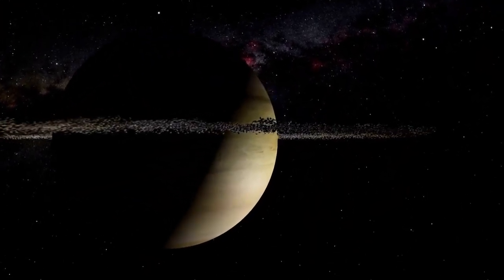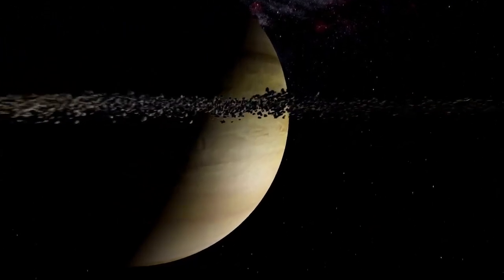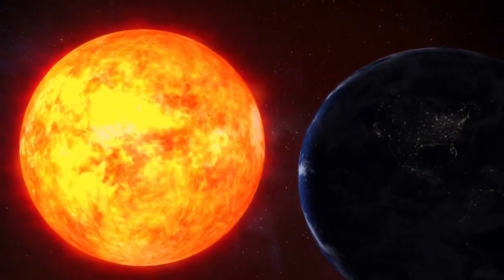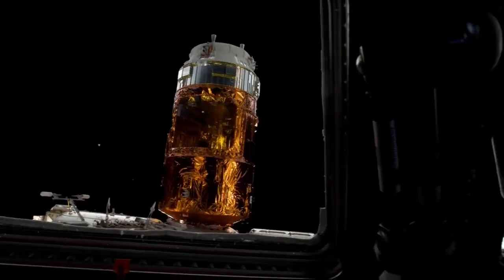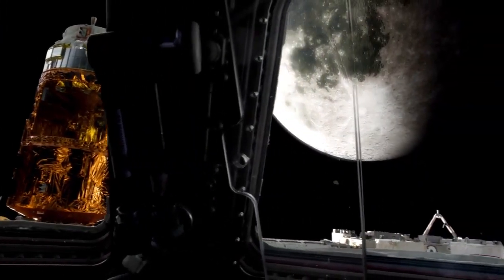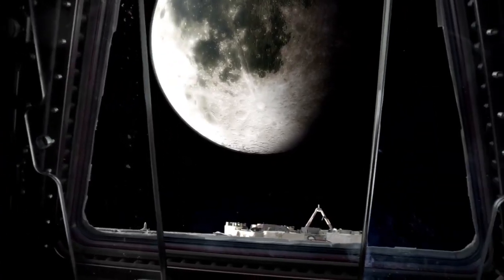But today, Voyager 1 has just sent back information that defies everything we thought we knew. At the edge of our solar system, in an area known as the Heliopause, Voyager 1 has recorded something scientists are calling an impossible discovery.